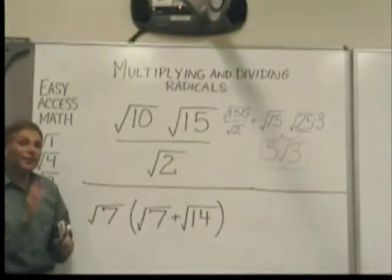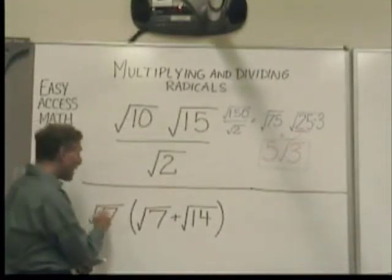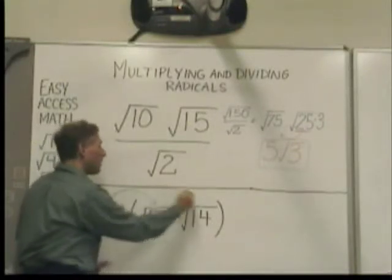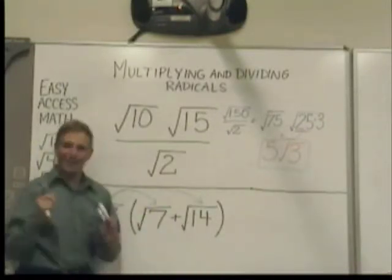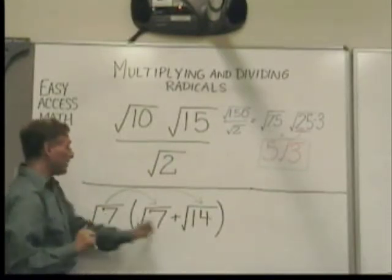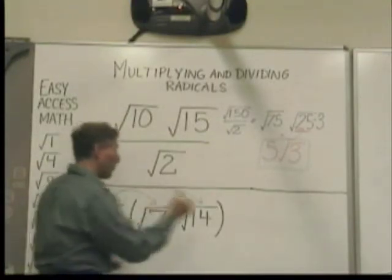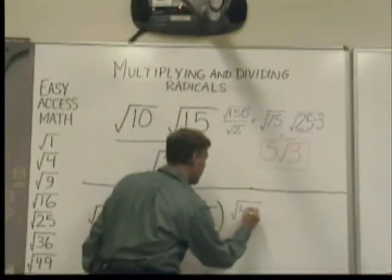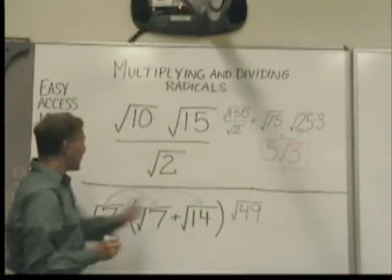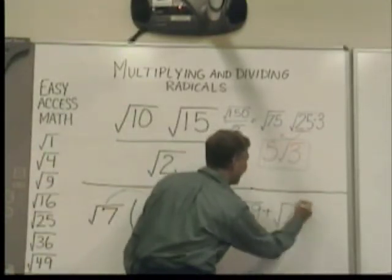Now take a look at this one on the bottom. This one involves distribution, which is multiplication. This radical seven — square root of seven — gets distributed to both of the numbers of the binomial inside the parentheses. So I have radical seven times radical seven, and that will give me radical forty-nine. And radical seven times fourteen gives me radical ninety-eight.